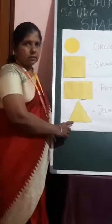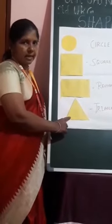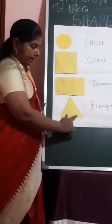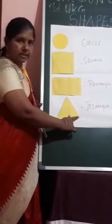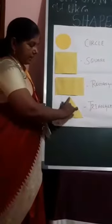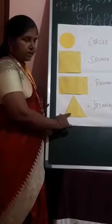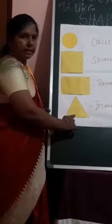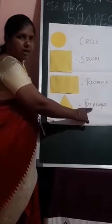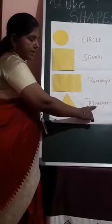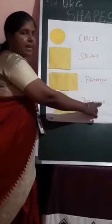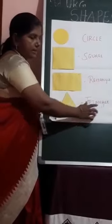The last one is triangle. Triangle has three sides and three corners. See children — the triangle has three sides and three corners. It is called triangle. Tell out the spelling: T-R-I-A-N-G-L-E. Triangle.